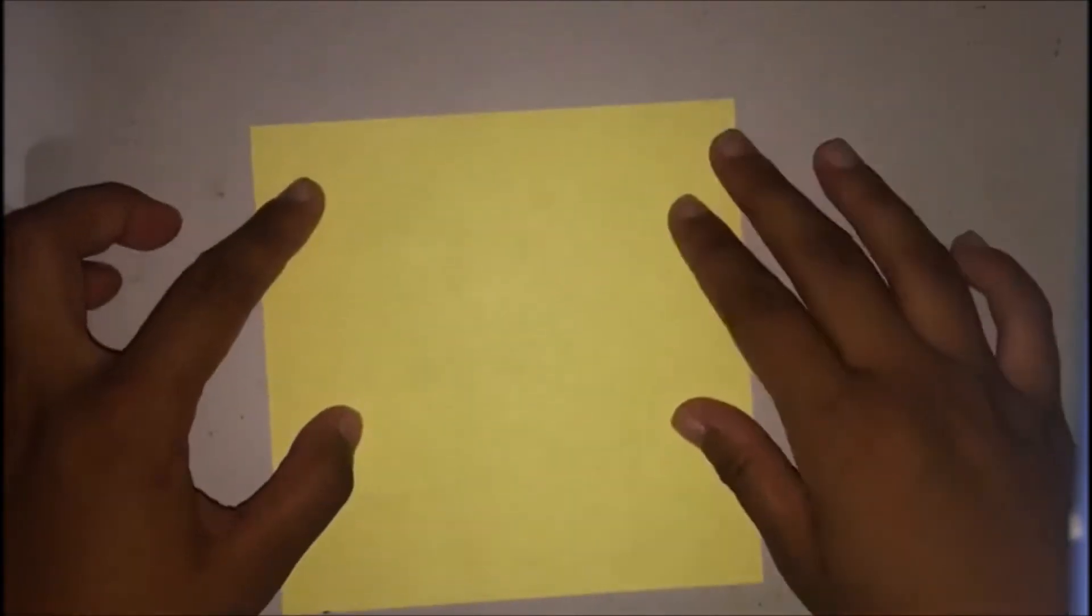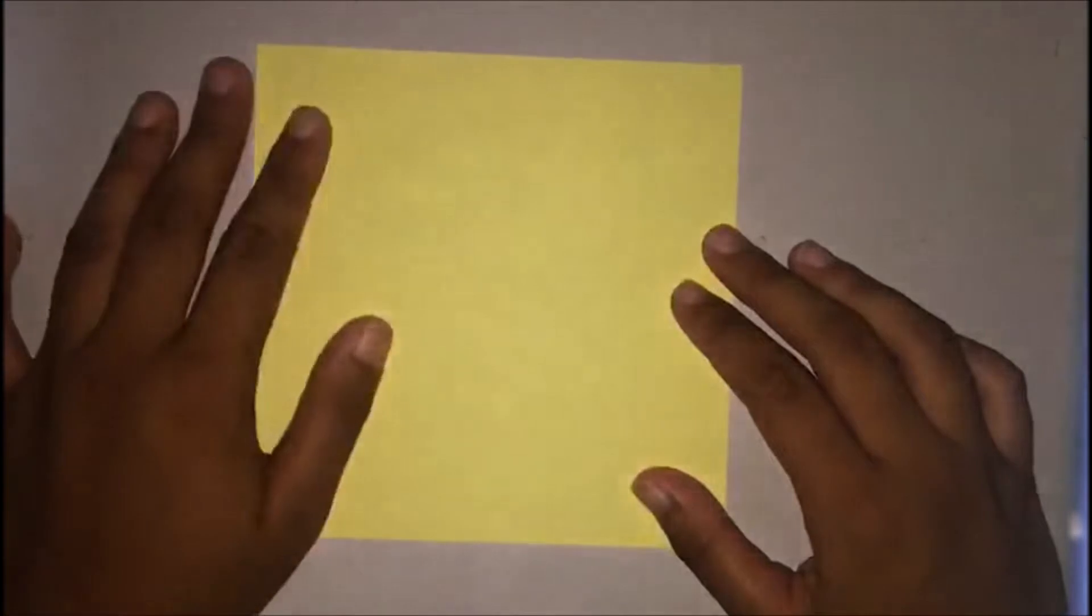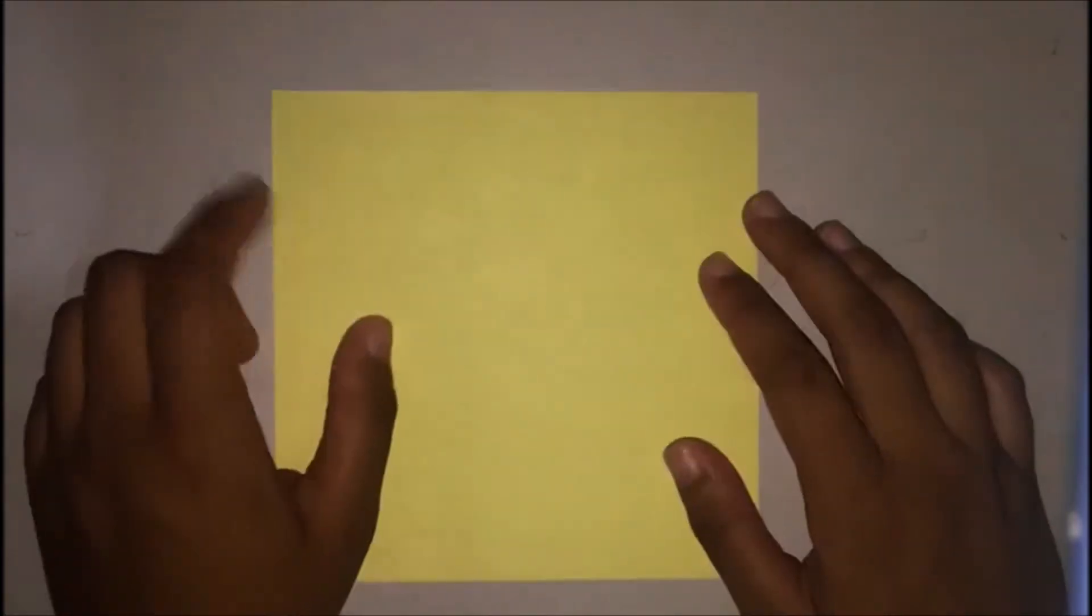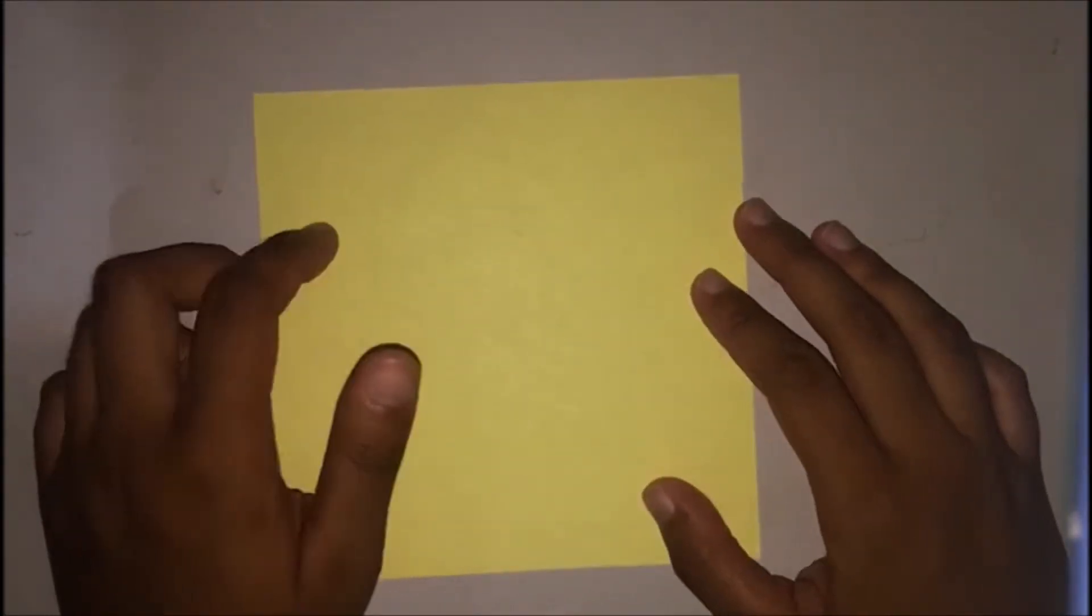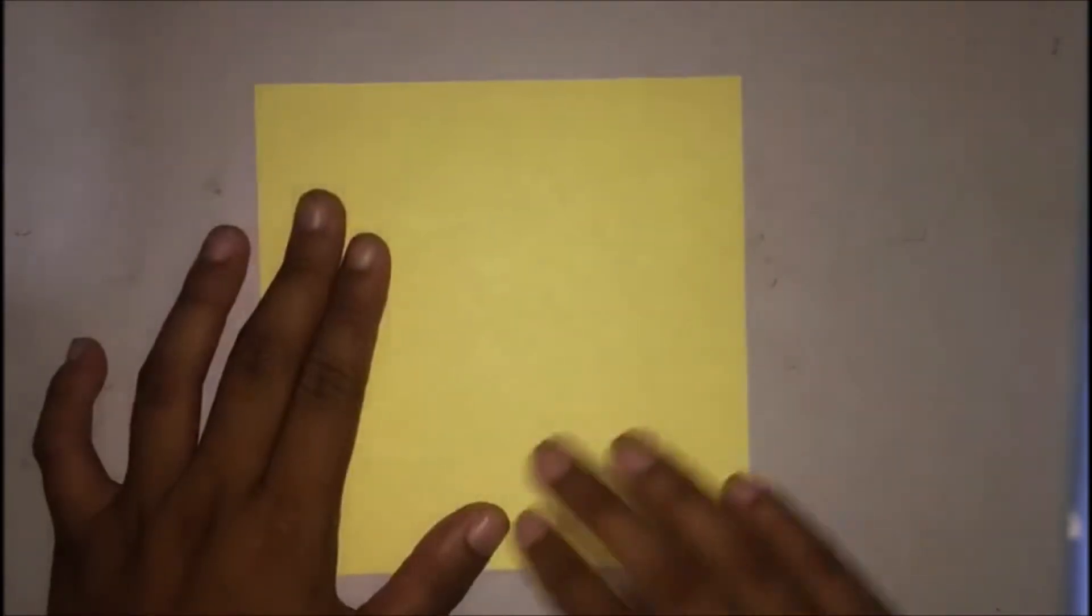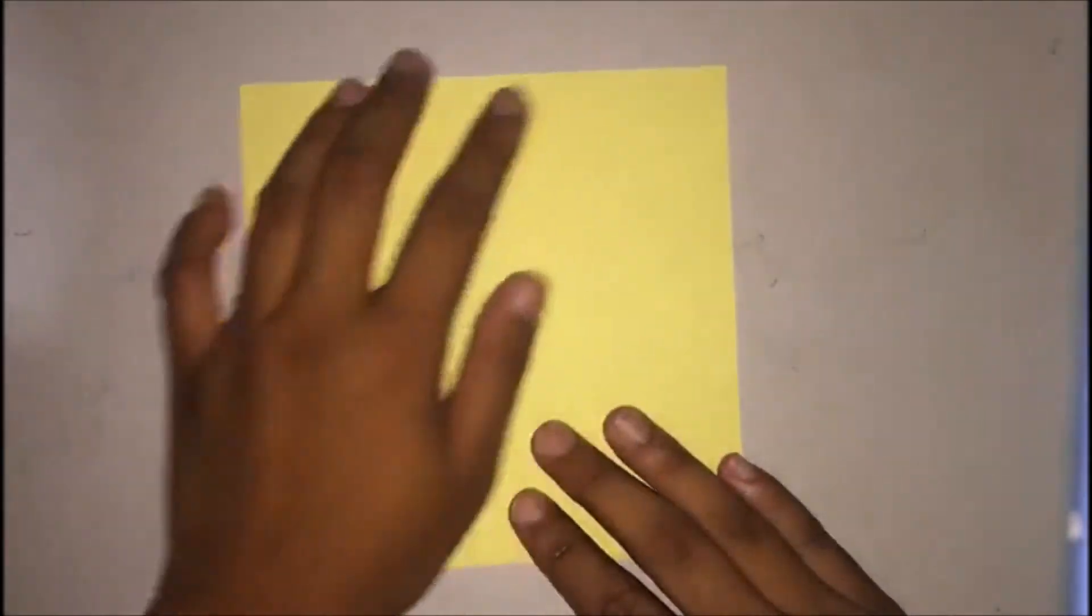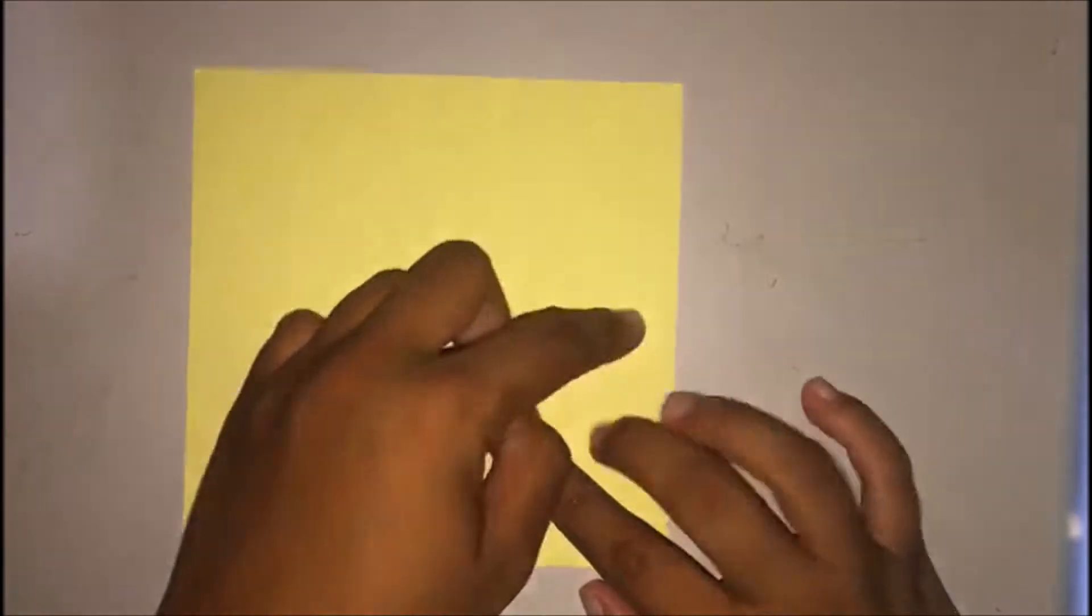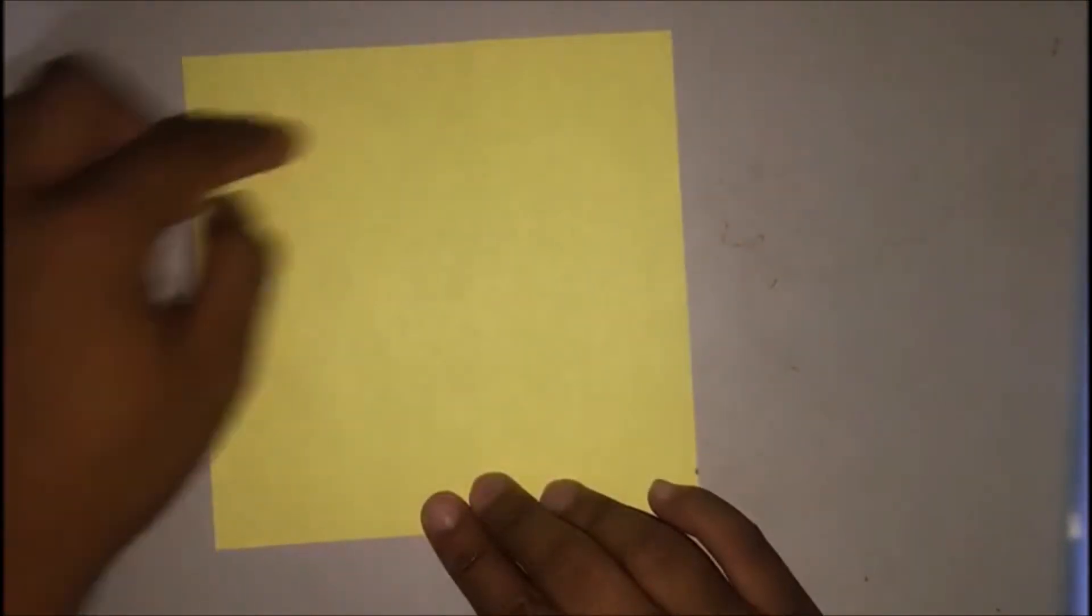First, you're going to need a square sheet of paper or origami paper which you can buy from any supply store. I didn't have origami paper so I had to use xerox paper. The measurements I'll be using for this is 5.5 inches on each side.